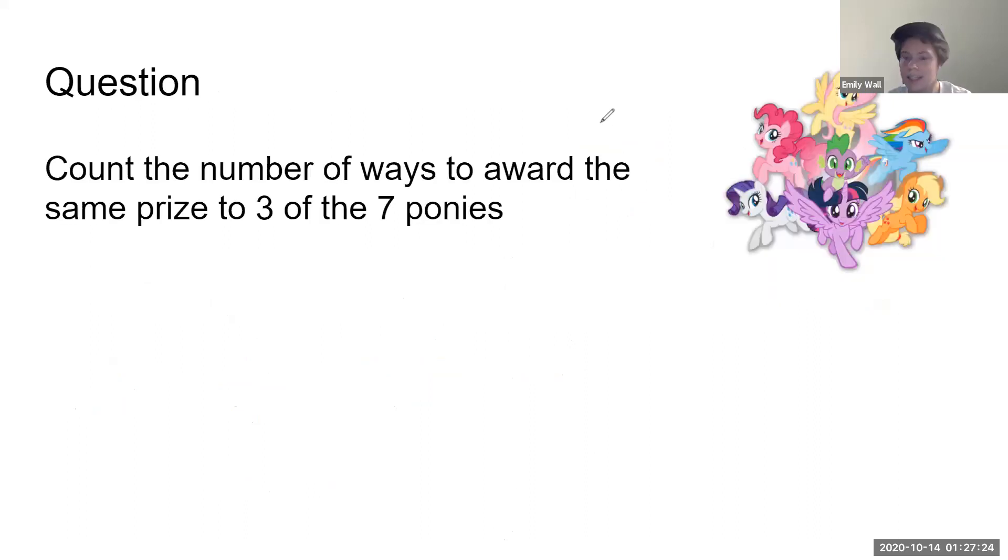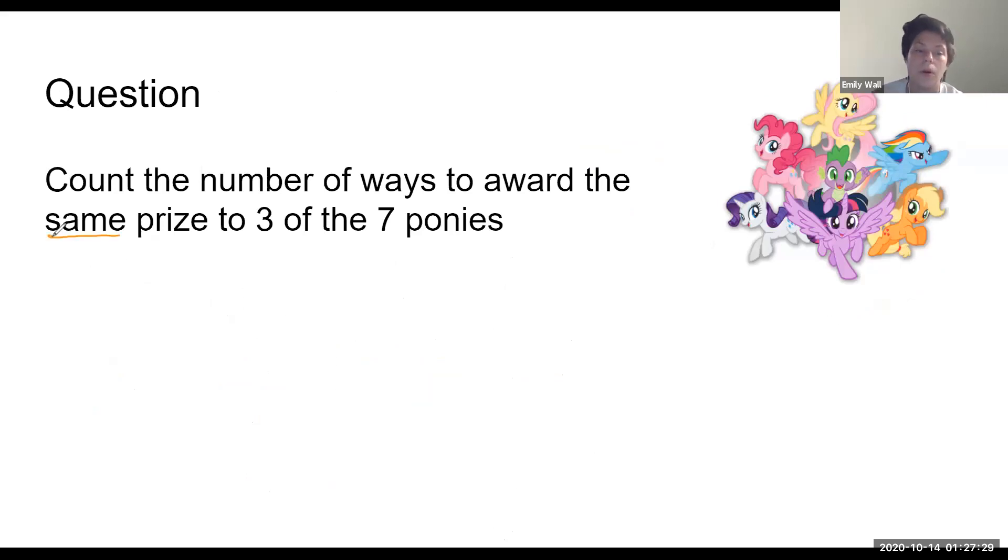Moving to combinations now. We're awarding the same prize, so A B C is the same as B A C - you need to count them the same. Sometimes what I draw this out as is counting the number of different boxes of ponies I could have. If I was going to store three of these ponies in a box and put it in the top of my closet, how many different boxes could I have?